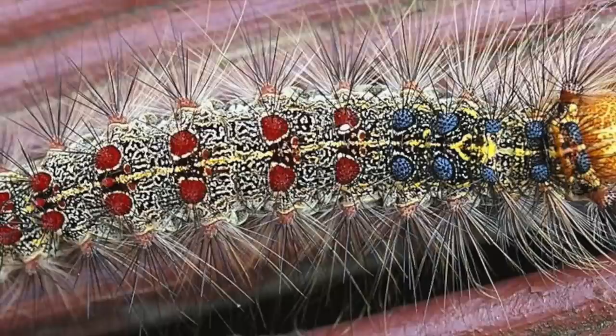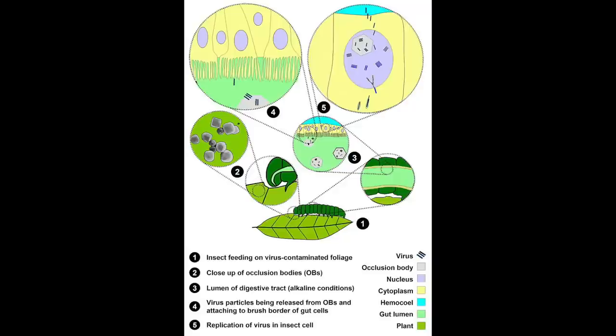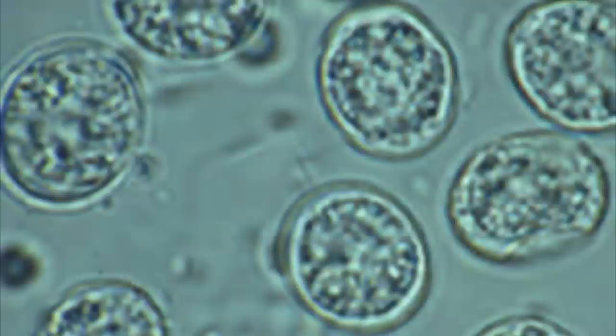Number 5: The Bacula virus infects the gypsy moth caterpillar and produces enzymes that make the caterpillar climb to the top of its tree, where it dies. Falling viral particles from the caterpillar then spread the virus to others.